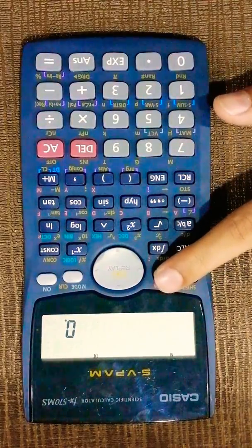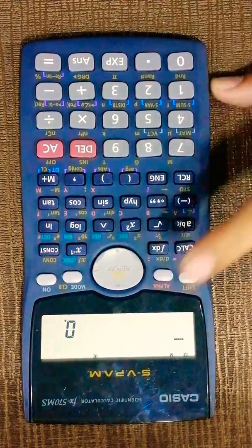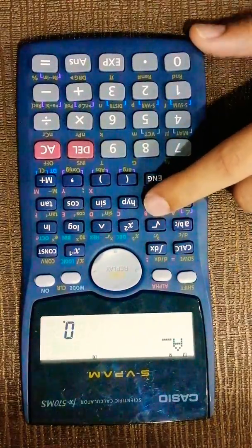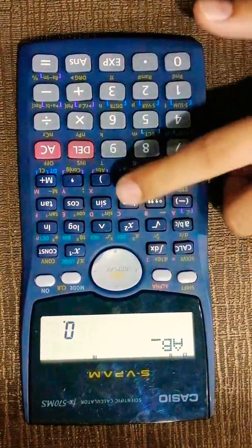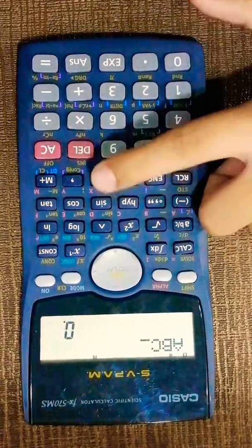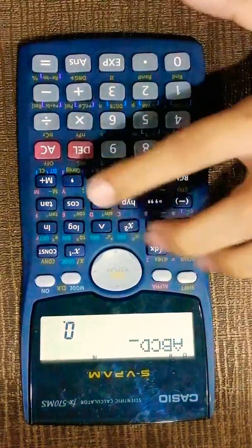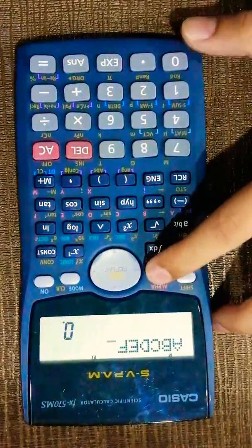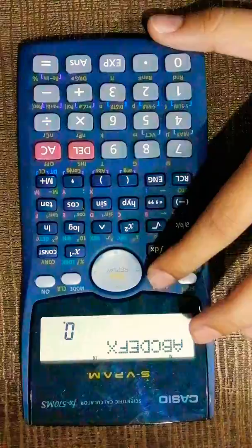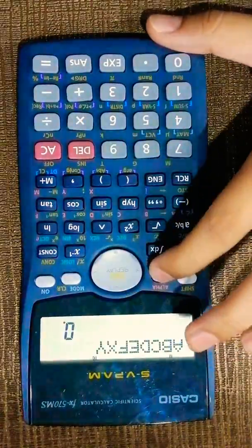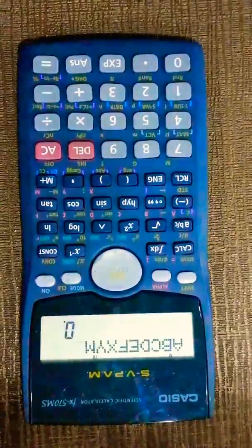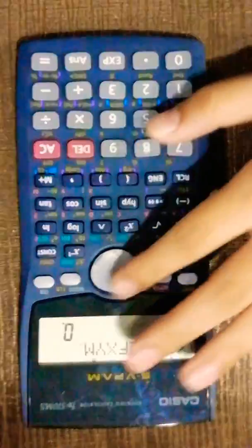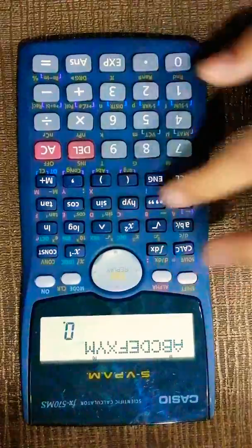So I'll press alpha and then A, then again B, and alpha C, alpha D, alpha E, alpha F, and then alpha X, alpha Y, alpha M. You can see all of these alphabets I typed, it just directly types in.